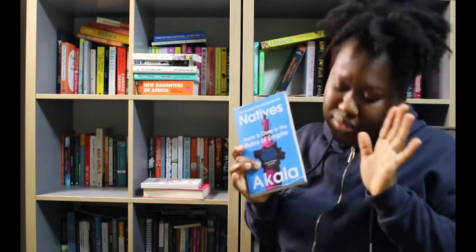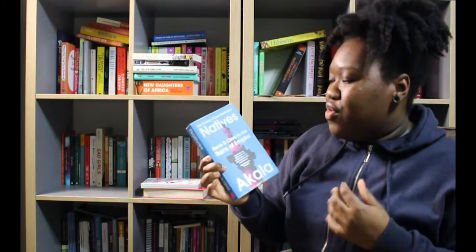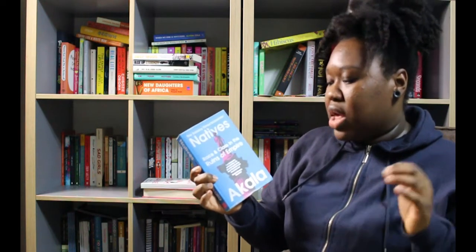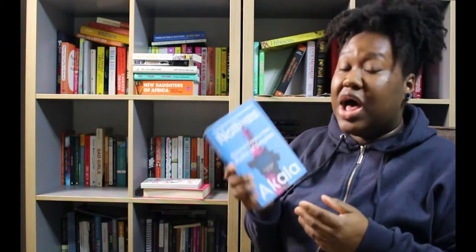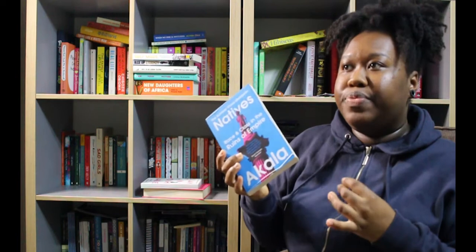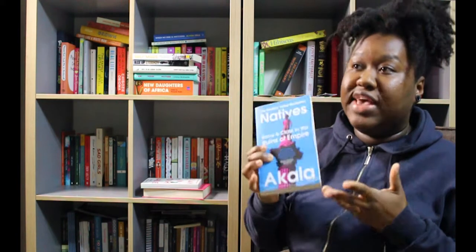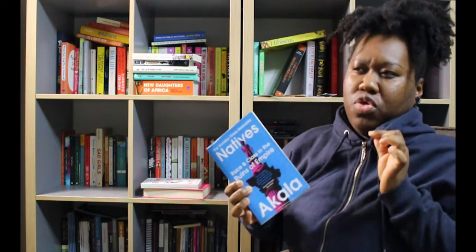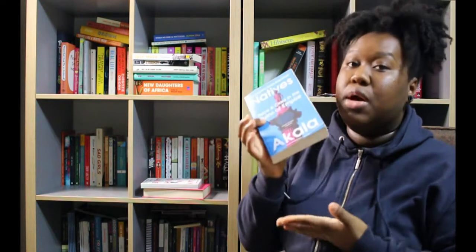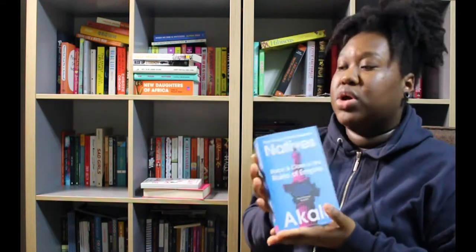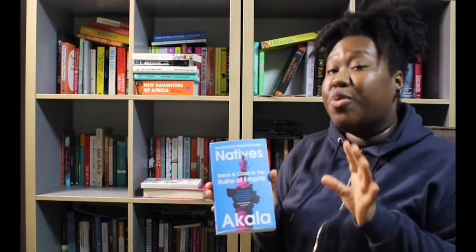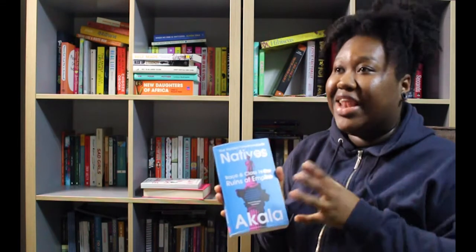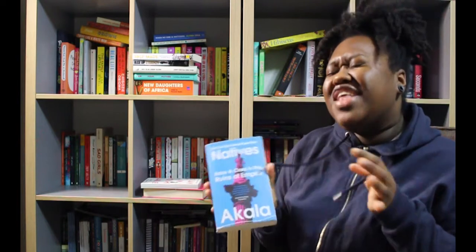Now we've got the King Kong here: Natives: Race and Class in the Ruins of Empire by Akala. I actually read this one - you can see it's falling apart. I've got the audiobook as well. To be honest, it took me a while to get through this book, but the audiobook - I got the audiobook halfway through reading this one and it made it go so much quicker. I love hearing Akala reading. Audiobooks are brilliant.